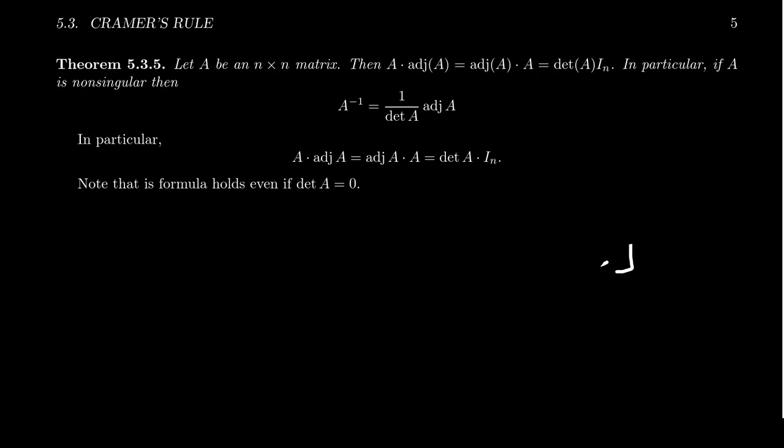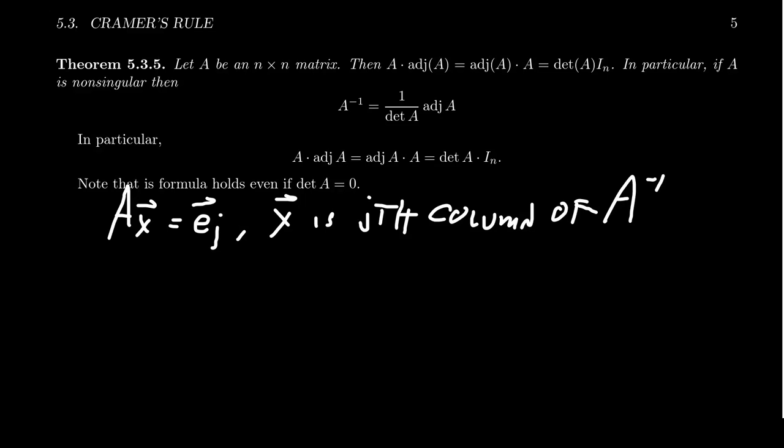So what I want to show that this works in general real quick, we've been using it for 2-by-2 matrices a lot, but we actually could do something like this for even larger matrices as well. And the argument is basically the following. The j-th column of A inverse is going to be a vector x such that A x equals E_j.